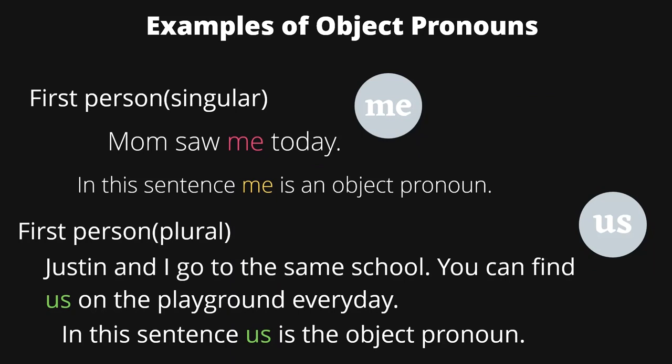Examples of object pronouns. First person singular would be 'me.' 'Mom saw me today.' In this sentence, 'me' is an object pronoun. First person plural would be 'us.' For example, 'Justin and I go to the same school. You can find us on the playground every day.' In this sentence, 'us' is the object pronoun.